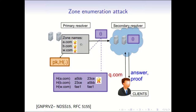When a client query comes in, if the element is in the database, the secondary resolver returns its signature. If it is not in the database — for example, q.com is not in this toy example — the secondary resolver returns the pairwise hashes along with the signature by the primary resolver to prove non-membership. This actually leaks much more information: a client can ask for domain names not in the database, collect these hashes as non-membership proofs, and mount a brute-force offline dictionary attack. This was demonstrated in the NSEC3 Walker. The proofs are leaking more information than they should — which is just non-membership.